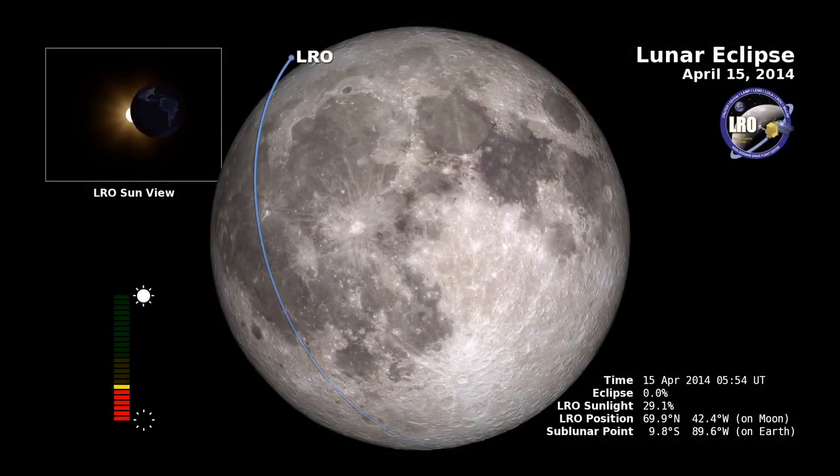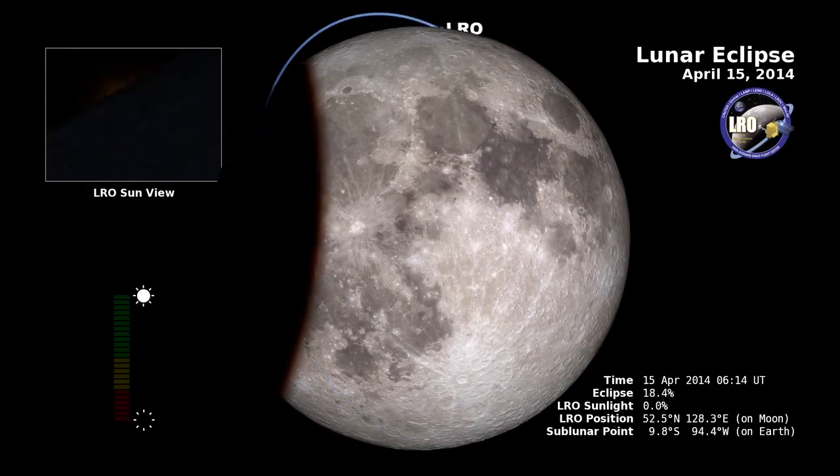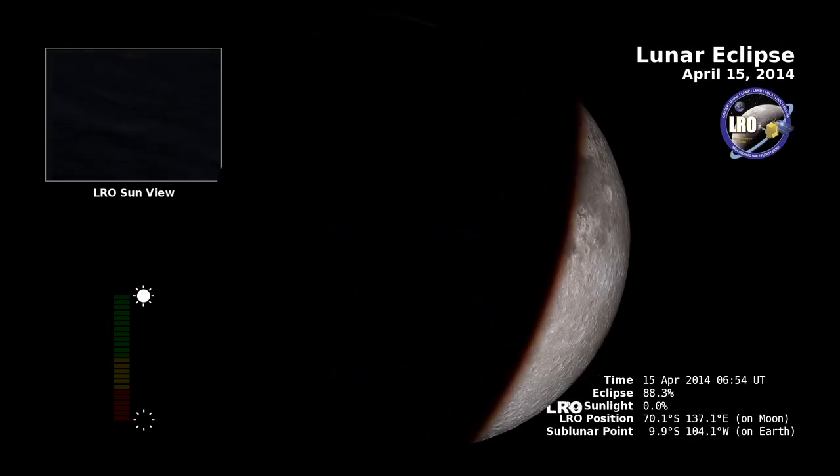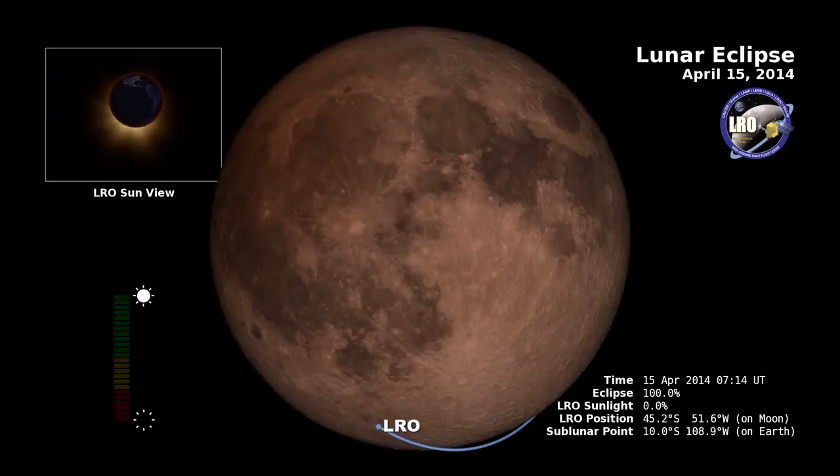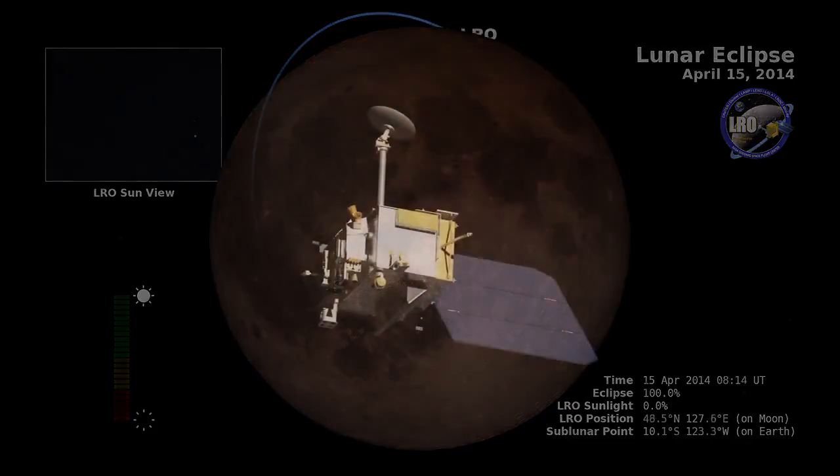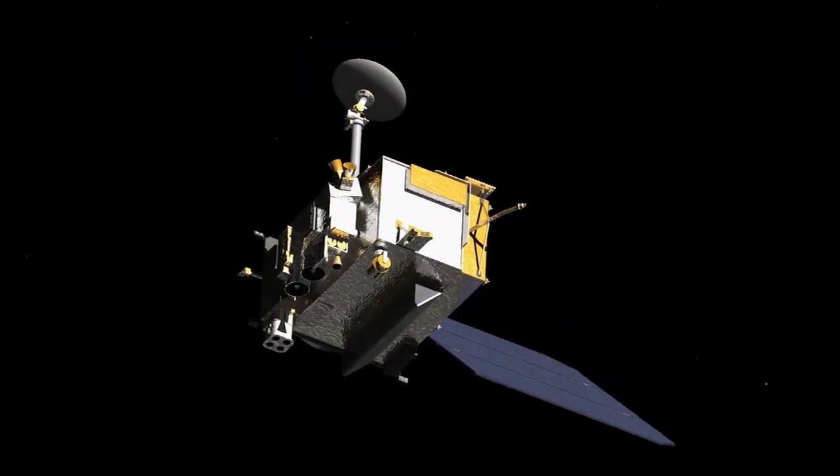So the eclipse is going to affect LRO in one very important way. LRO's batteries are charged by solar energy, and so during an eclipse, the moon and the LRO spacecraft are going to be in darkness for a very long period of time, so the battery won't get to be charged. So we're going to be turning off all of the instruments in LRO so we don't drain the battery. We'll be monitoring real-time how the battery is doing during the eclipse, but we won't be making any scientific observations during this eclipse.